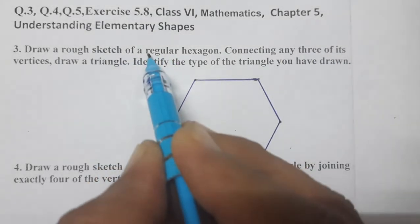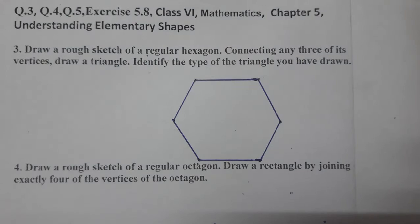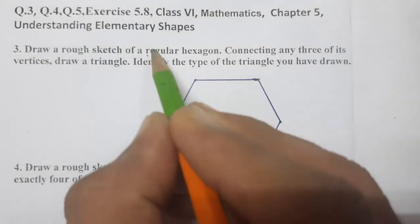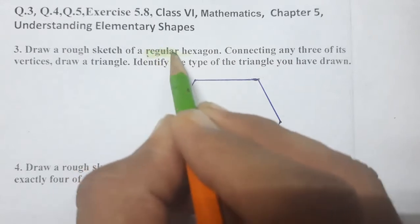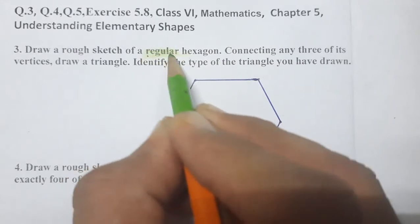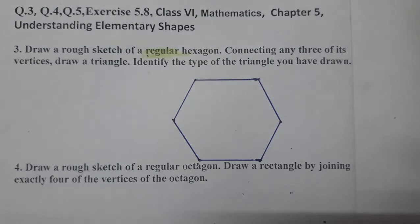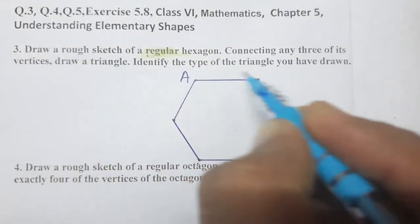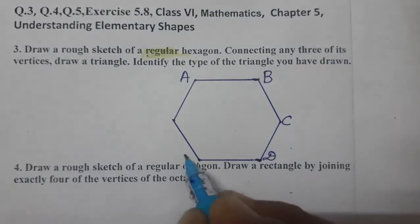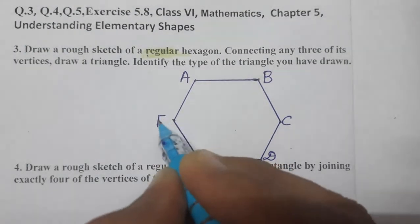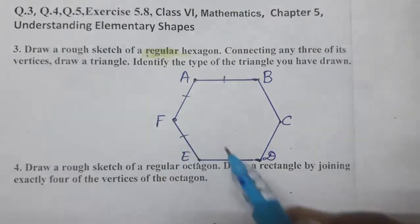Connecting any three of its vertices — what is the meaning of regular hexagon? A regular hexagon is one in which all sides are equal. Regular means all sides are equal. A polygon is called regular if all its sides are equal. Let us name this polygon A, B, C, D, E and F.